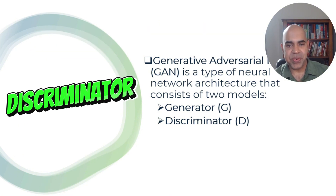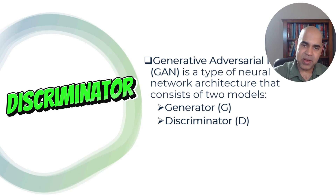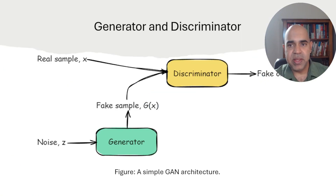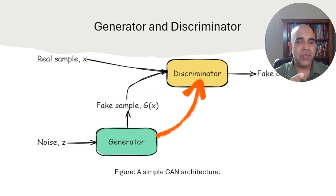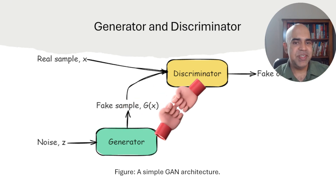What is a Discriminator? The Discriminator acts as a classifier that distinguishes between real data — samples from the training dataset — and fake data, which are samples created by the Generator. The Discriminator is trained to identify whether the input data is genuine or generated. These two components, the Generator and the Discriminator, are trained simultaneously in a game-like framework where they improve by competing with each other, known as adversarial training.